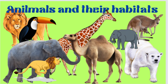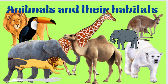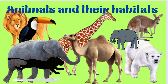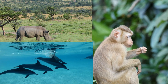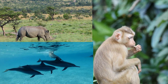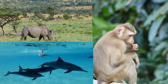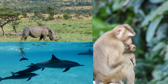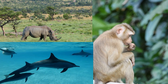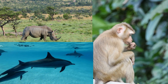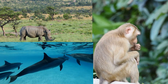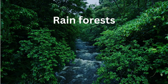Hi guys. Let's talk about different habitats and examples of animals found there. Habitat means a natural home for plants and animals. Living things, including plants and animals, have their natural habitats. In this video, we are going to focus on animals. Let's begin.